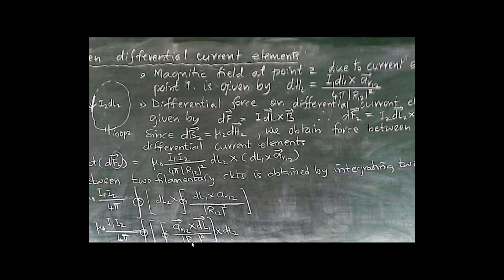So what is force between differential current elements? We have two differential current elements: i1 dl1 and i2 dl2. The path separating these current elements is called r12. This is represented as loop 1 and loop 2. The two differential current elements are moving in opposite directions - i1 dl1 moving upwards and i2 dl2 moving downwards.